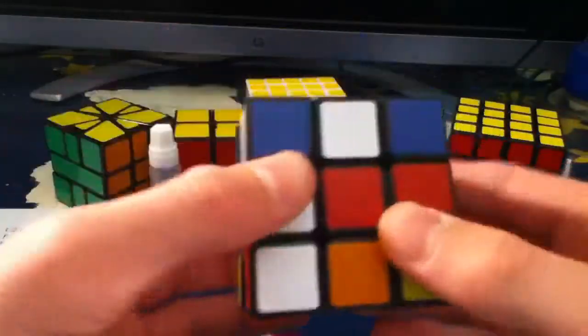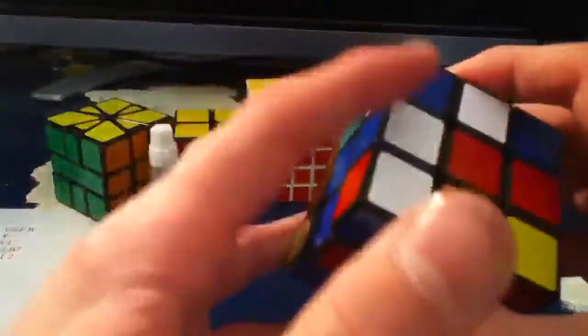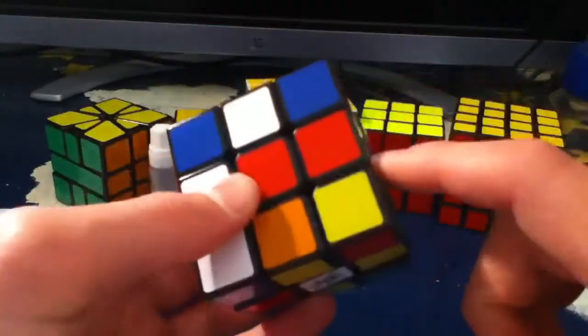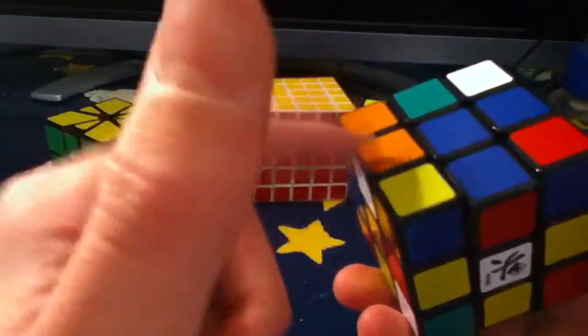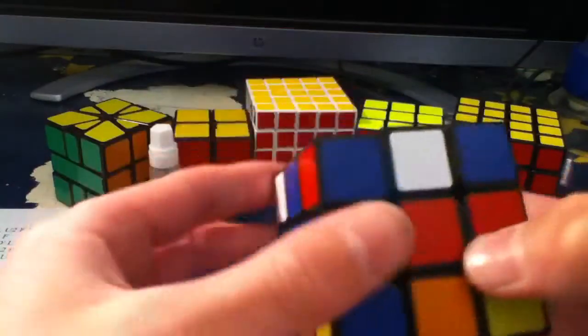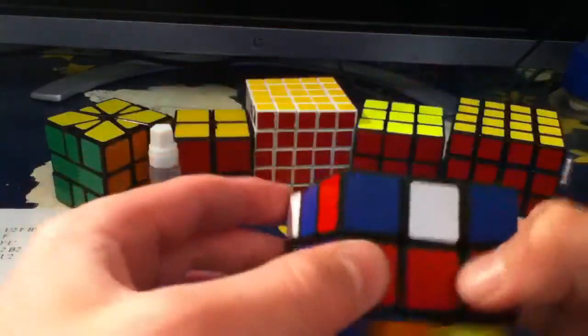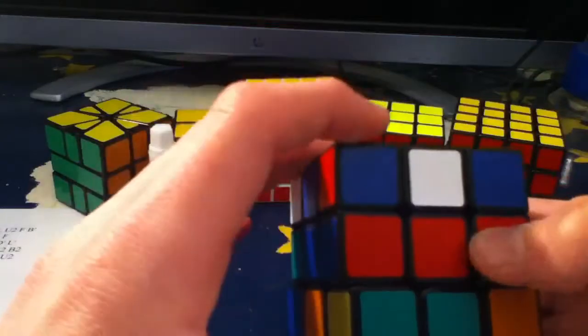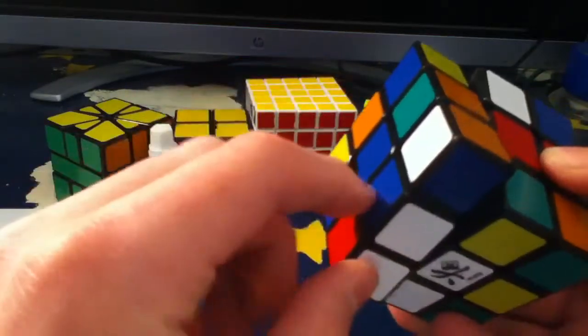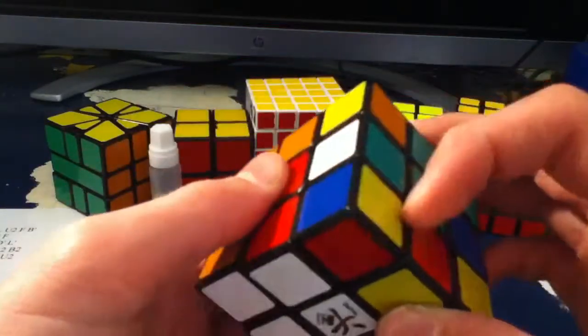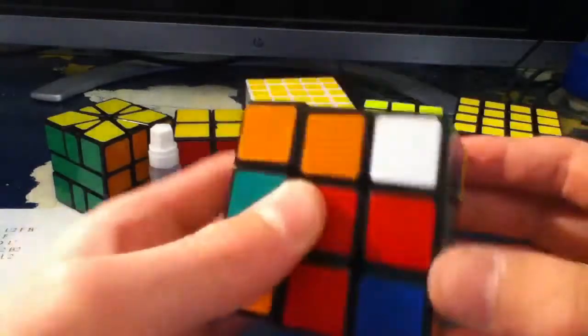Okay, so I see my four cross edges right here, here, here, here, and here. Now I'm first going to place this white-orange and then align it with its center, and I'll place the white-blue, white-red, and white-green.